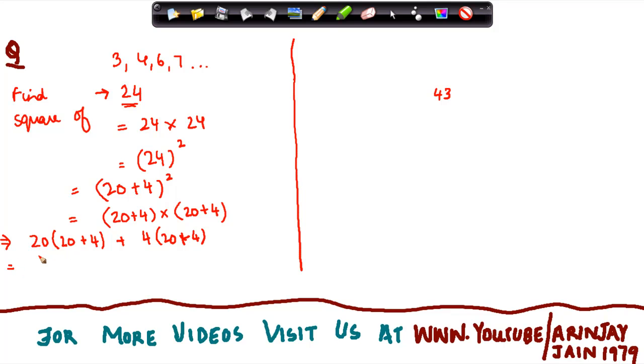So now 20 into 20 is equal to how much? Now we know that this is 2 into 2, it gives me 4 and I put in 2 zeros here, plus 20 into 4 is 80. Now because I have a 0, it becomes very easy for me to multiply this. Then 4 times 20 is again 80 and 4 times 4 gives me 16.